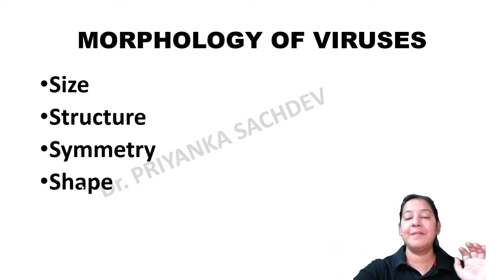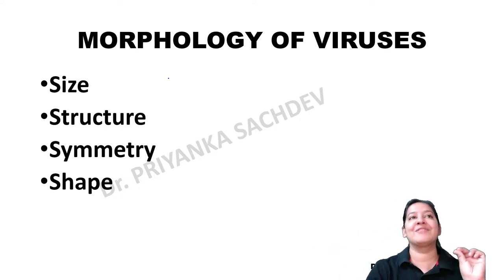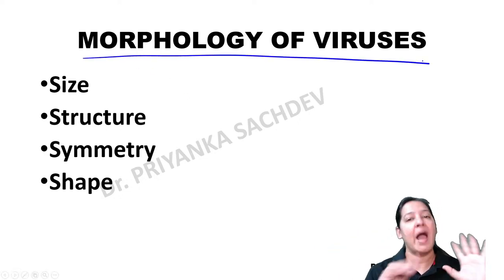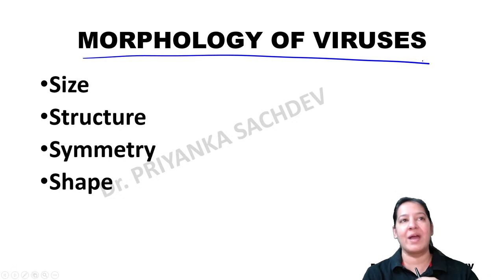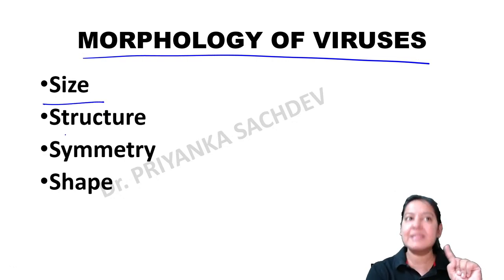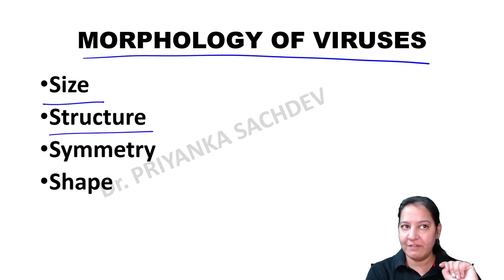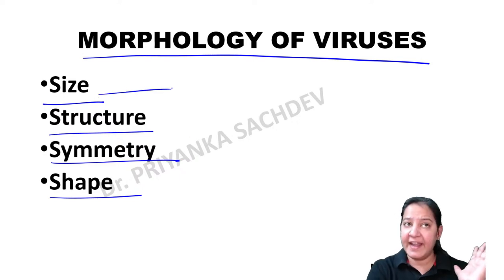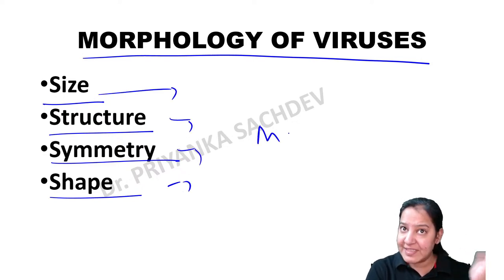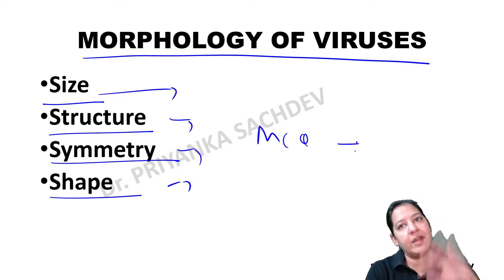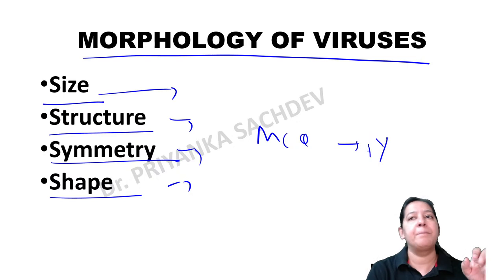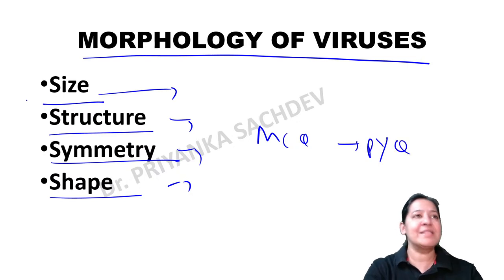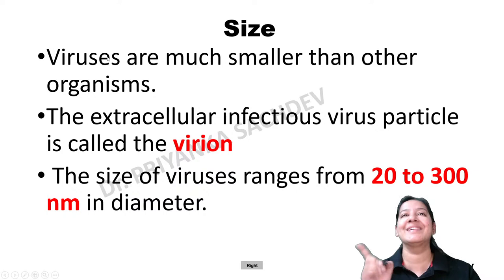Now let me start the morphology of the virus. I am going to teach you viruses under four headings: the size of the virus, the structure of the virus, the symmetry of the virus, and the shape of the virus. In each topic we will do the relevant MCQs which are already asked in previous year question papers.